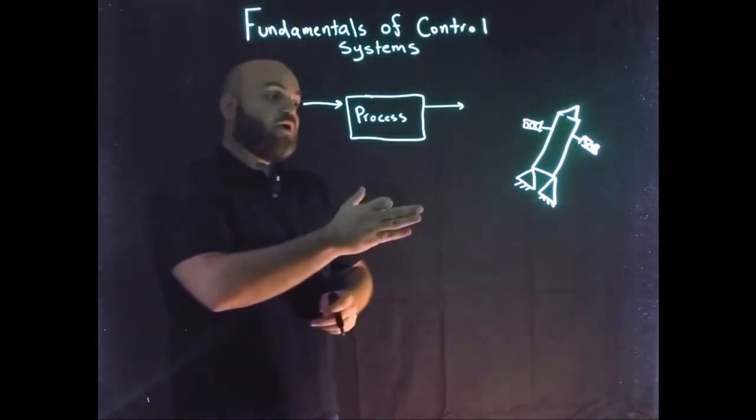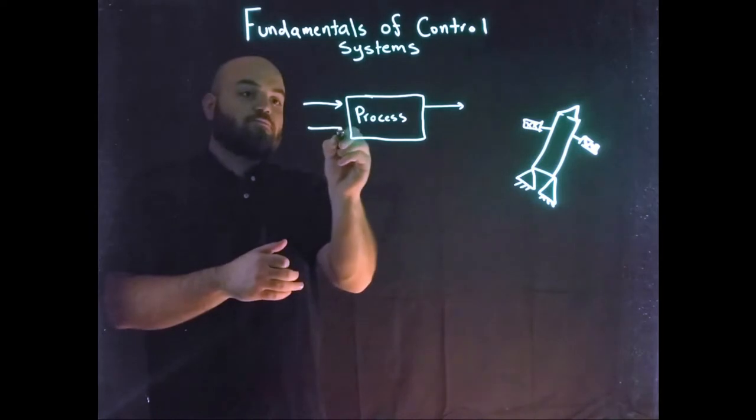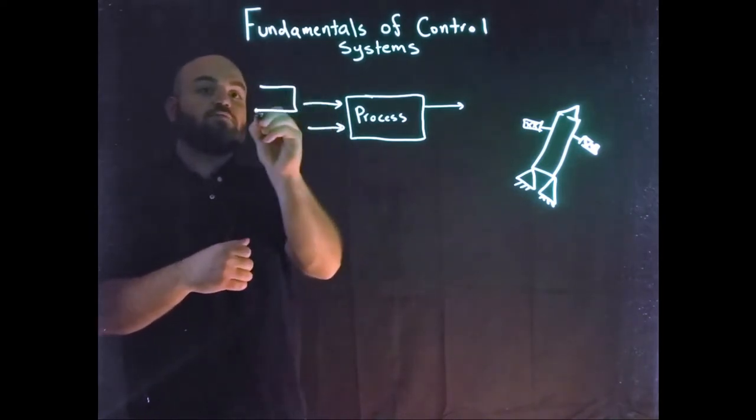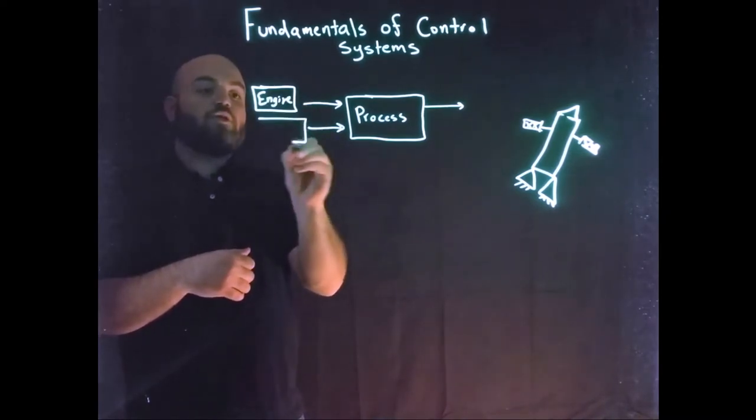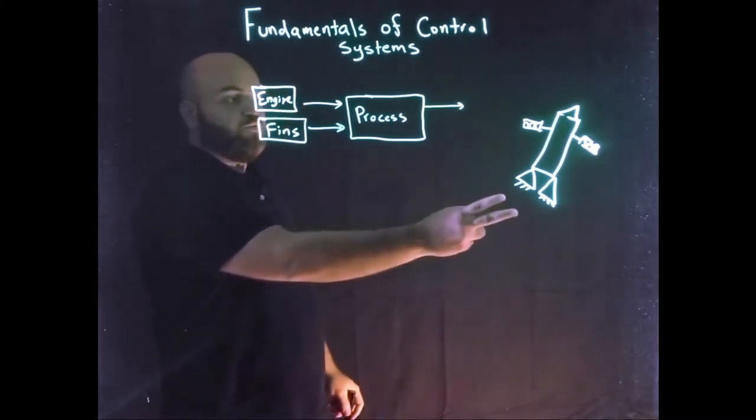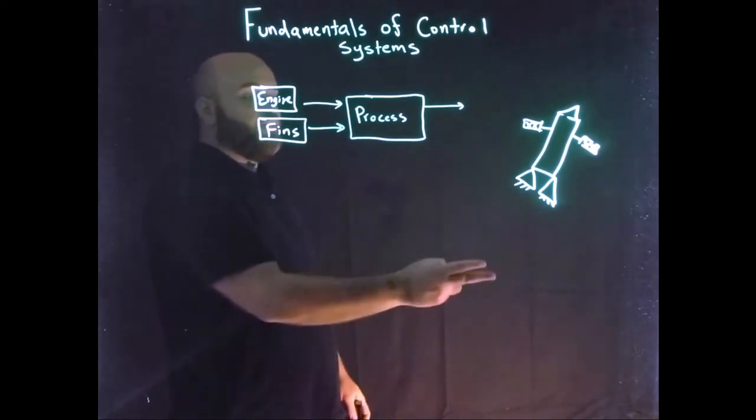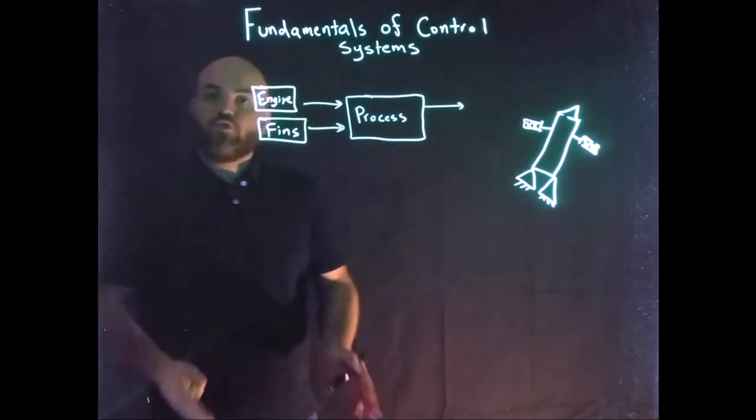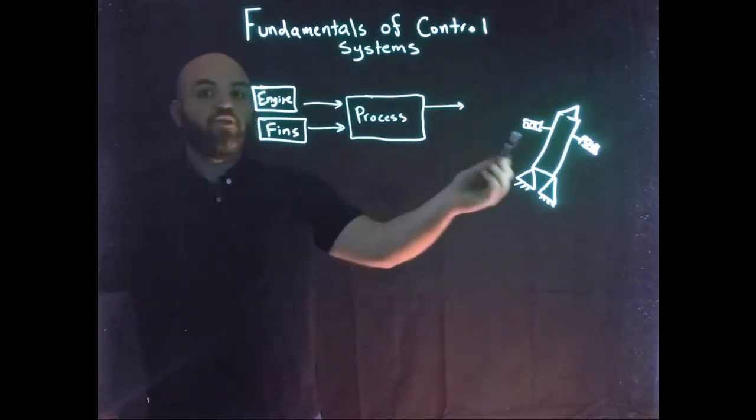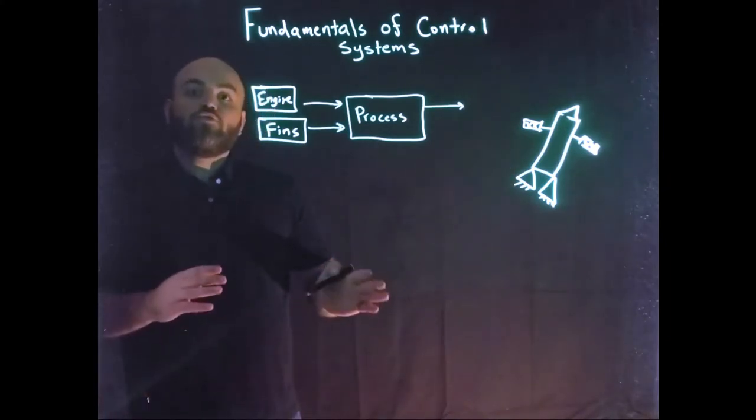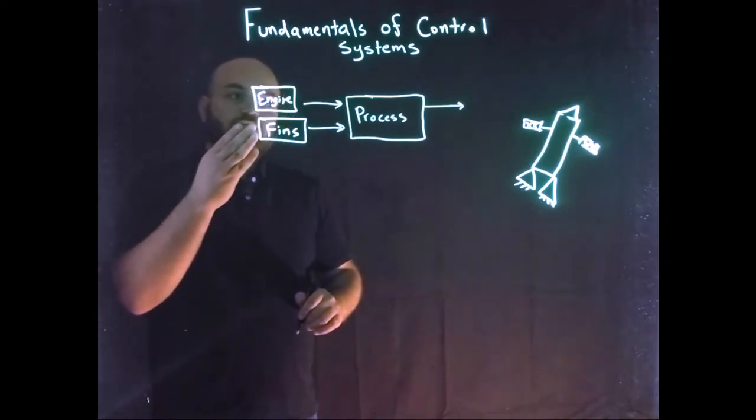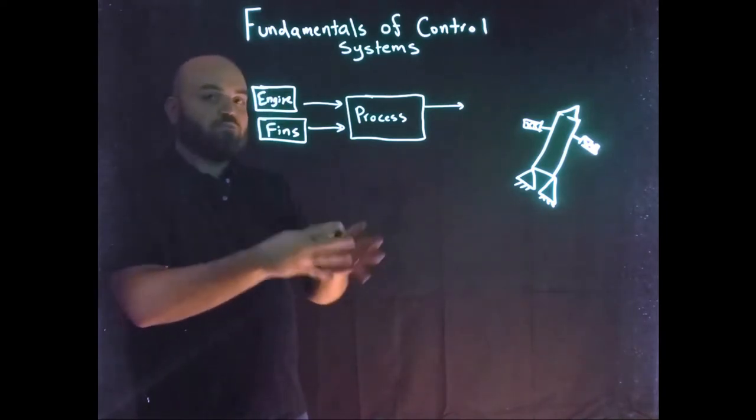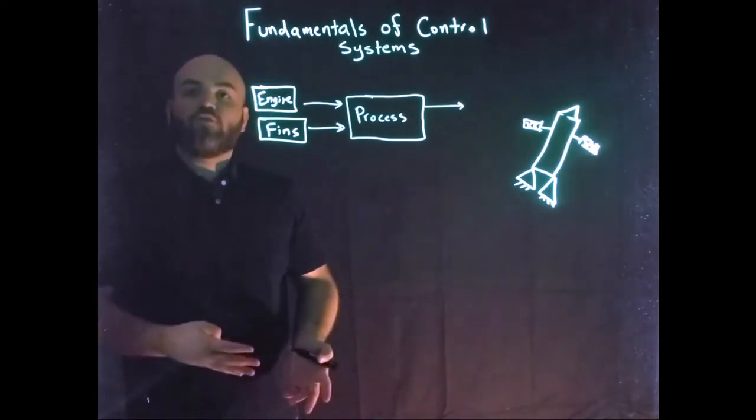In this case, this rocket takes in two inputs. The first input is the rocket engine, and the second input is the aerodynamic fins. In this case, we have one, maybe more rocket engines. And when you fire those rockets, the rocket moves in the opposite direction - Newton's third law of motion. And the fins on the rocket are used to manipulate aerodynamic forces and make the rocket move around. So we have engines and fins going to some process, which is the whole rocket system, and then the output is the motion of the rocket.